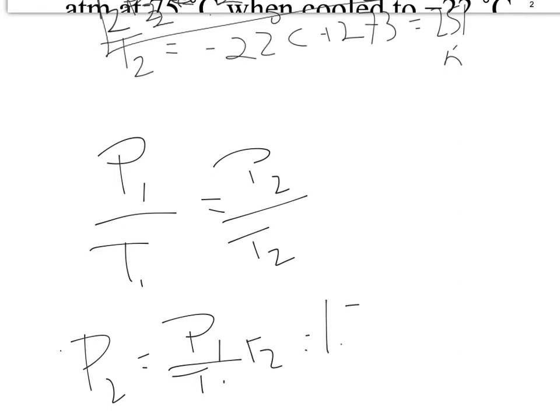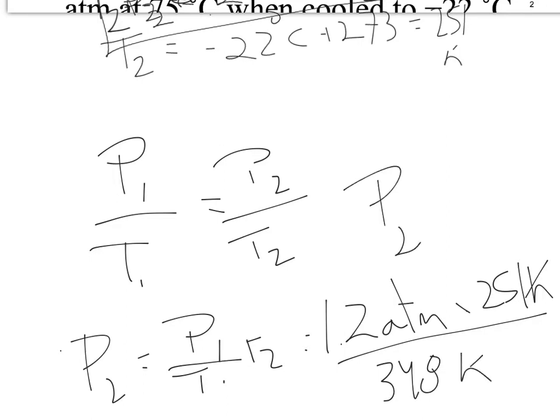P2 is equal to P1 over T1 times T2, and we substitute our values. So, that's 1.2 atm times 251 Kelvin over 348 Kelvin. When we do the calculations, P2 equals 0.86 atm.